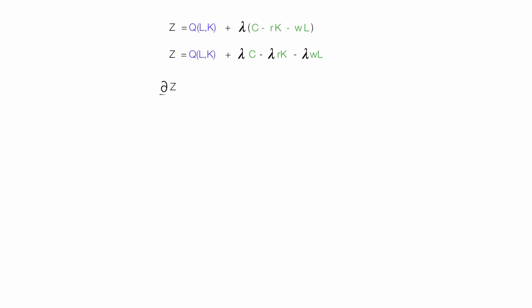Now I'm going to take the partial derivative of Z with respect to L. This gives me the partial derivative of Q with respect to L — that is, how does quantity change as labor changes? Then I take the derivative of the second part of the equation. Those terms are constants because they don't contain L, so I'm left with minus lambda times W.